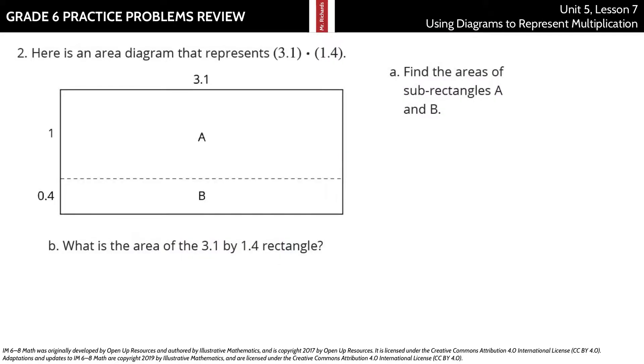Here is an area diagram that represents 3.1 times 1.4. Find the areas of sub-rectangles A and B. Well, A is just 1 times 3.1, and 1 times anything is simply that anything, so the area for A is going to be 3.1.